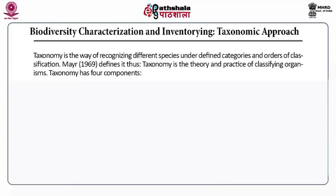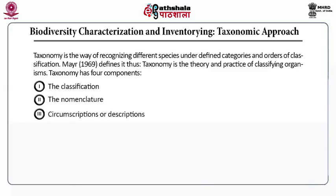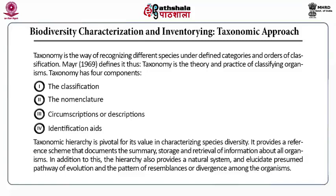Biodiversity characterization and inventorying: taxonomic approach. Characterization is done by a taxonomic approach. Taxonomy is the way of recognizing different species under different categories and orders of classification. Mayr, a scientist, in 1969 defined it as: taxonomy is the theory and practice of classifying organisms. It has basically four components: the classification, the nomenclature, circumscriptions or descriptions, and identification aids. Taxonomic hierarchy is pivotal for its value in characterizing species diversity.